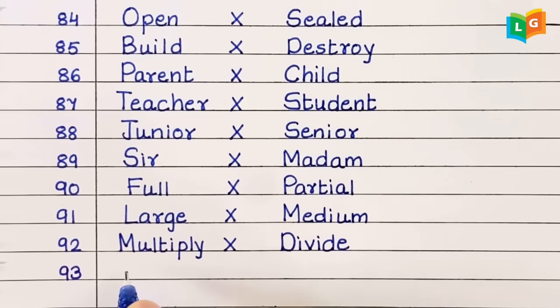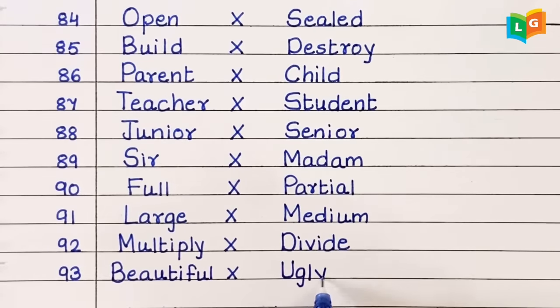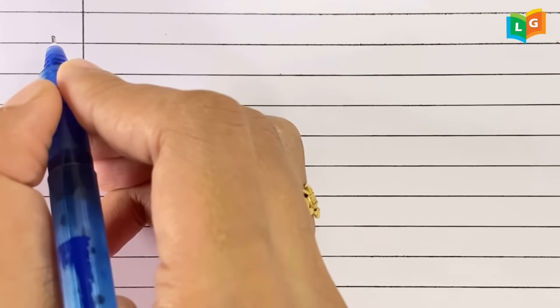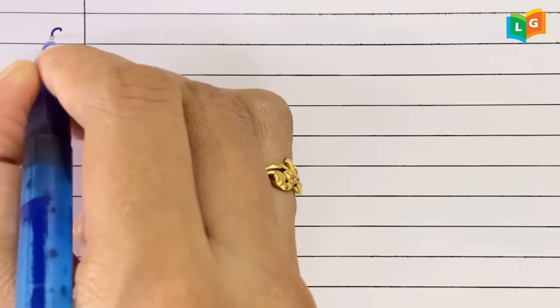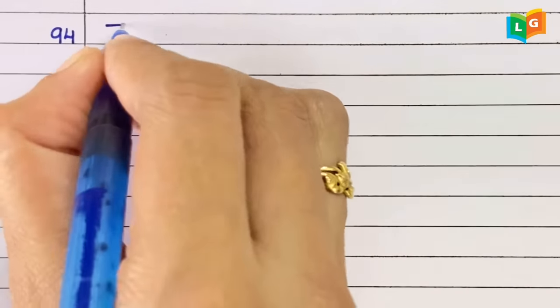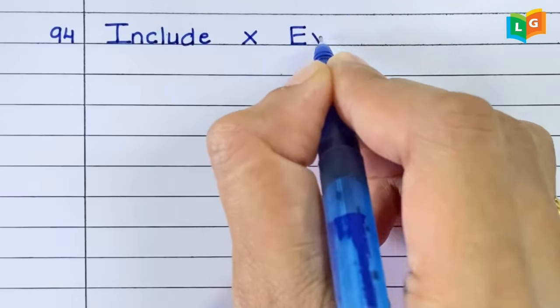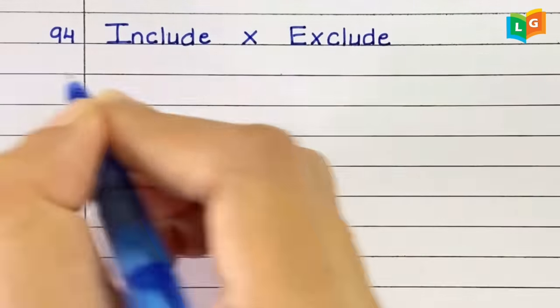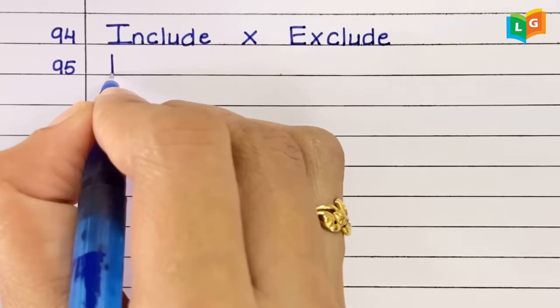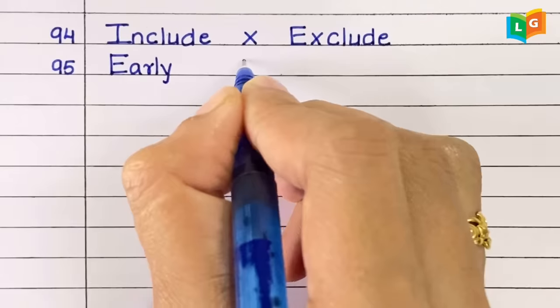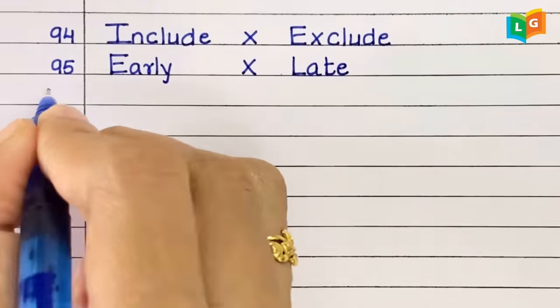Ninety-three, beautiful, ugly. Ninety-four, include, exclude. Ninety-five, early, late.